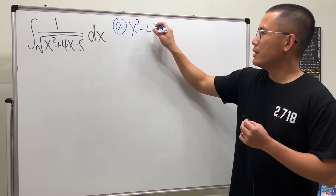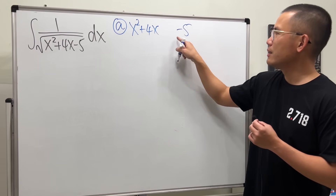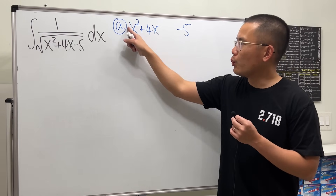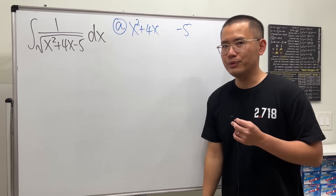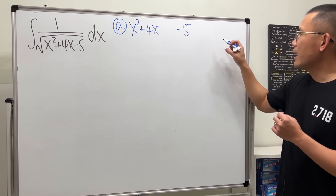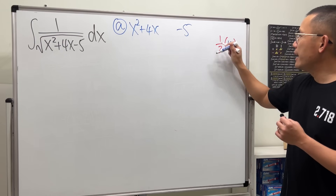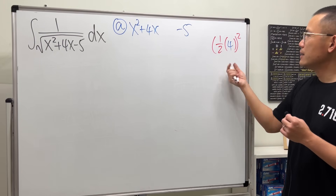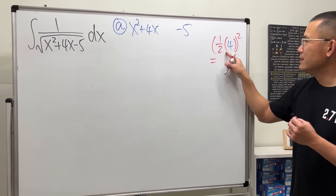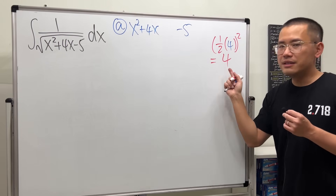We'll minus the 5 right here, then leave a space to complete the square. First, make sure we have a 1 in front of the x squared, which we do, and then look at the coefficient of x, which is 4. Now go ahead and take half of 4 and then square that — this is the little formula you have to remember. This is 2 squared, which is 4.